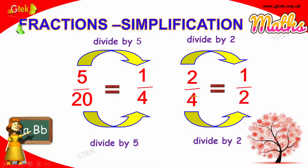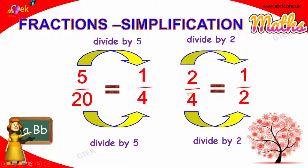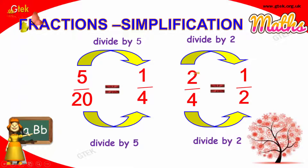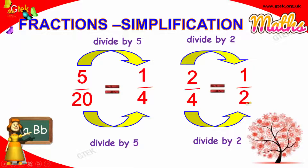Now I have two divided by four. The common number between these two is two. So, two is divided by two and four is divided by two. You get one by two.